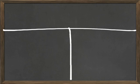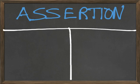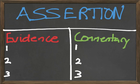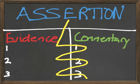Now watch what happens when we use the ACE model matrix. We put the assertion at the top, evidence in the left column, and commentary in the right column. For each unique piece of evidence, there's a piece of commentary that brings it back to the assertion. I want readers to move from assertion to evidence to commentary to evidence to commentary until they agree with the assertion.